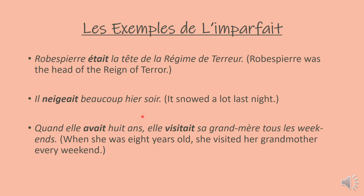Il neigeait beaucoup hier soir — it snowed a lot last night. It was a continuous action, it was snowing, so we use imparfait. Quand elle avait 8 ans, elle visitait sa grand-mère tous les weekends — when she was 8 years old, she visited her grandmother every weekend. We use imparfait here because it's a continuous action over a whole period when she was 8. If it had been that she visited her grandmother on a particular date, like last Monday or last weekend, then we would have used passé composé.